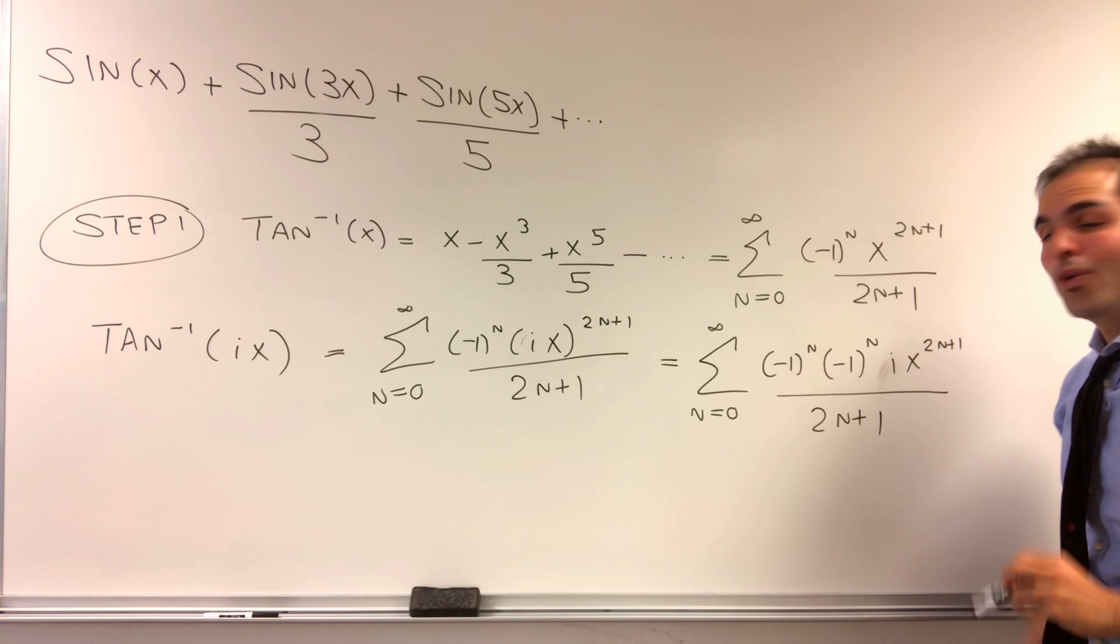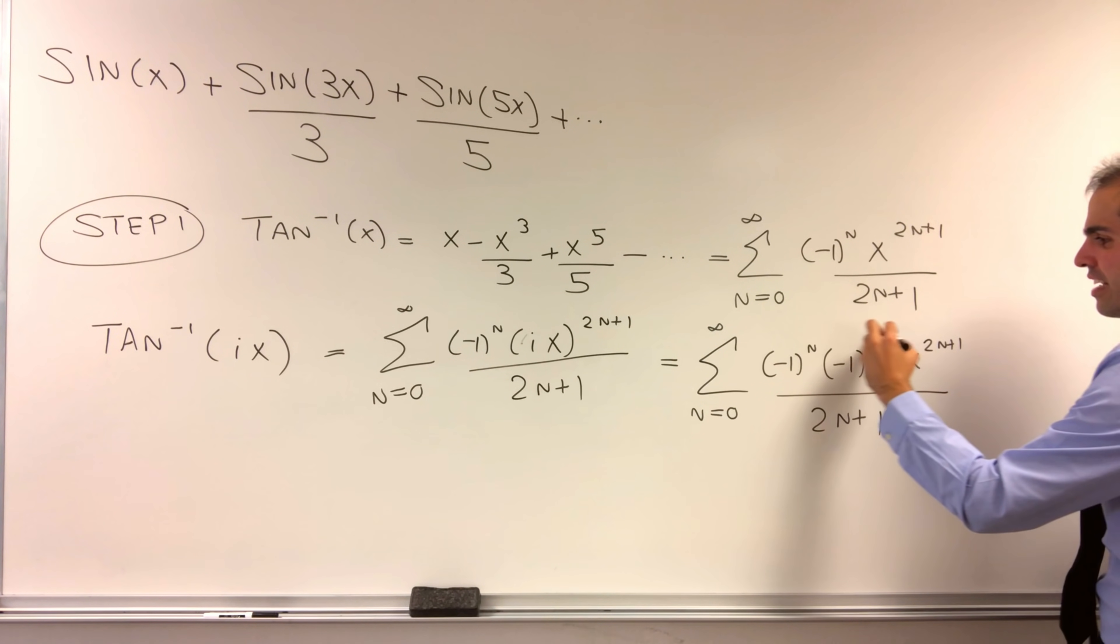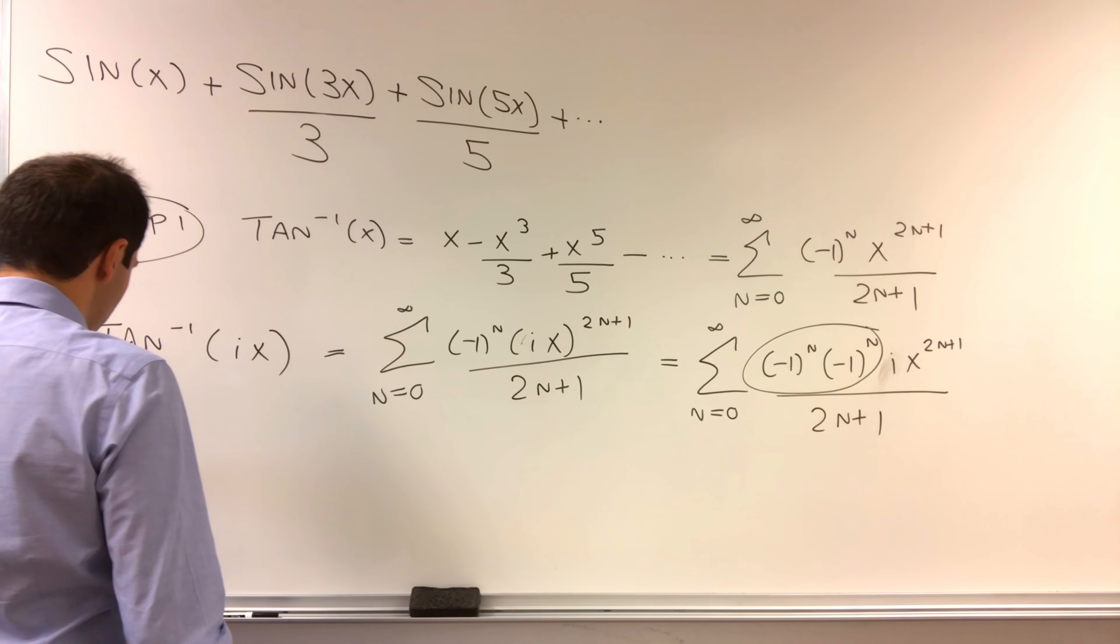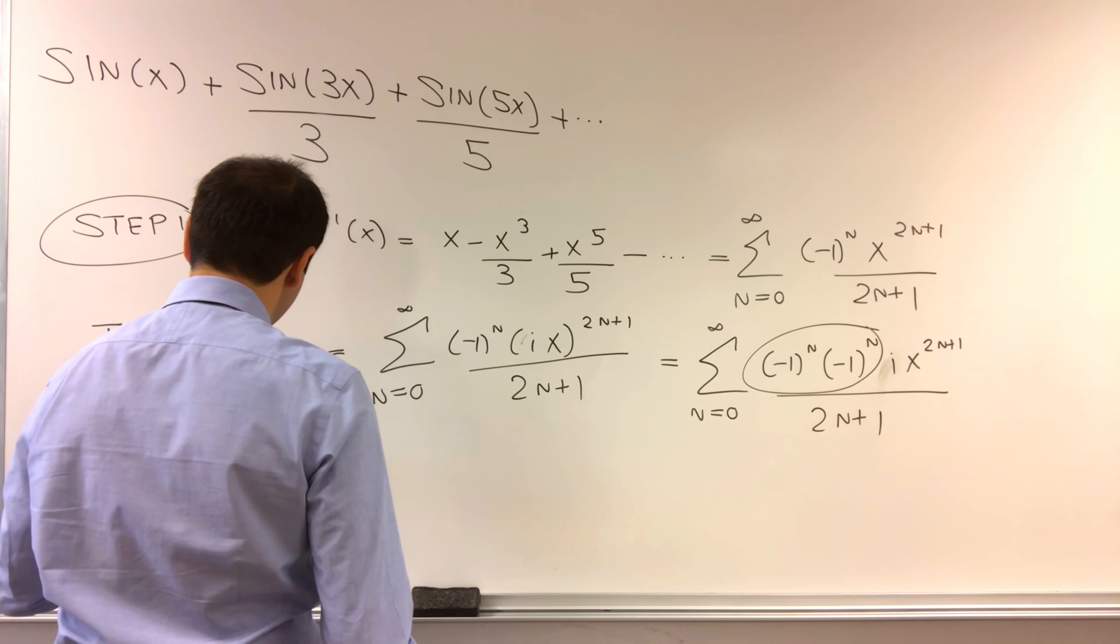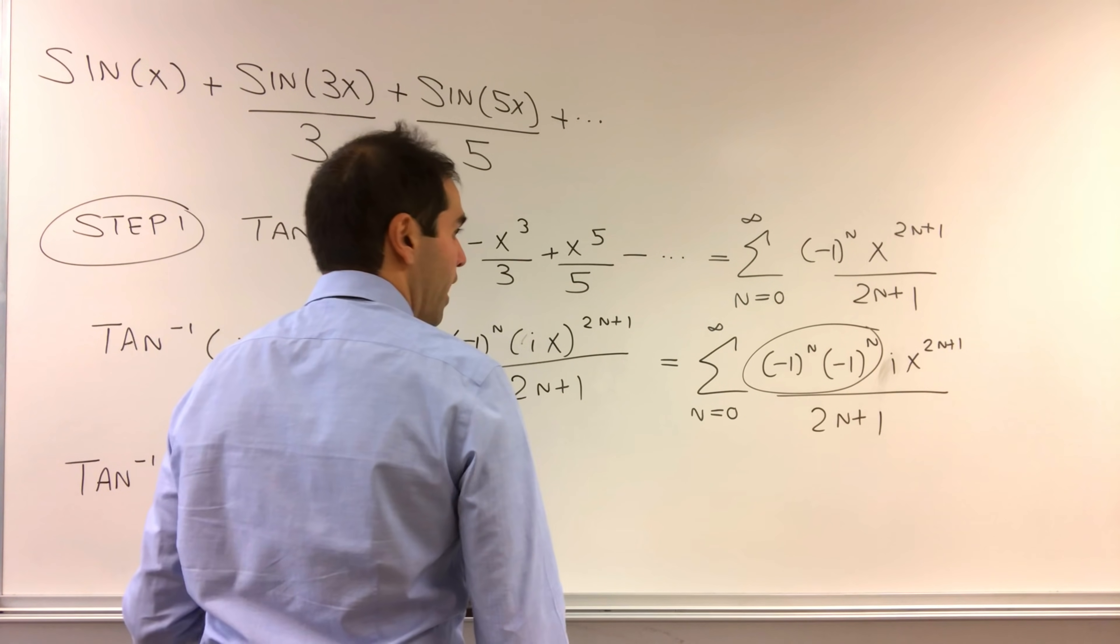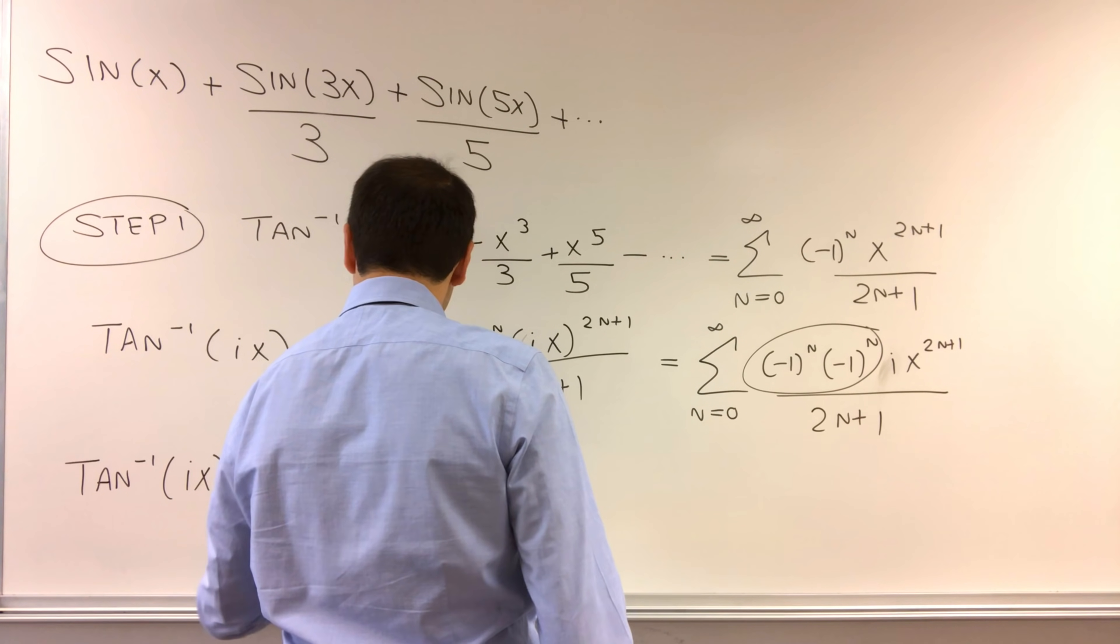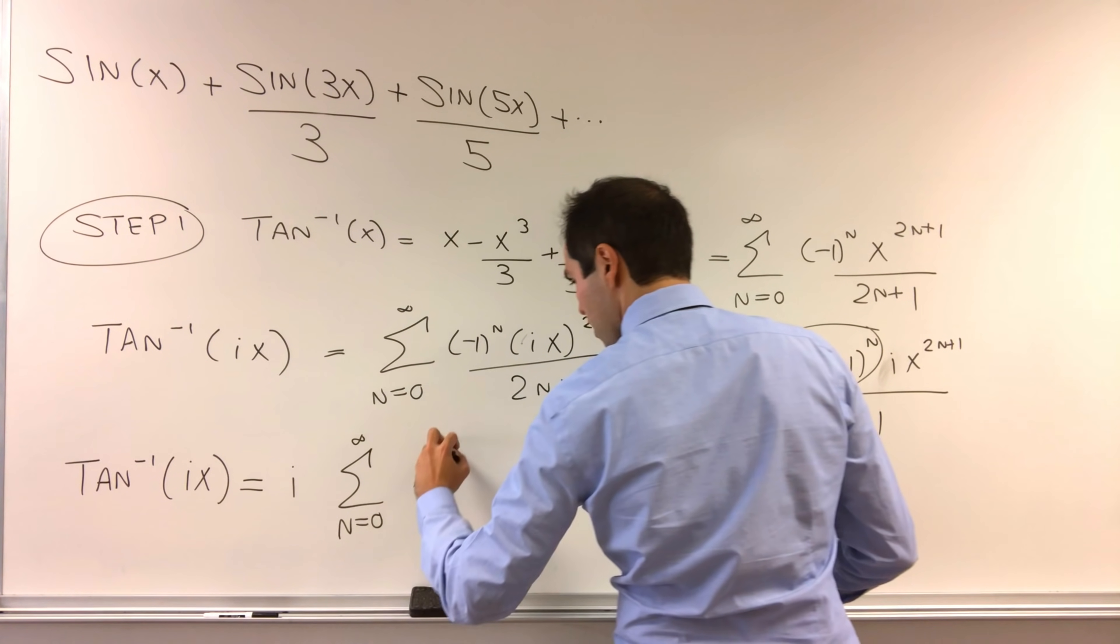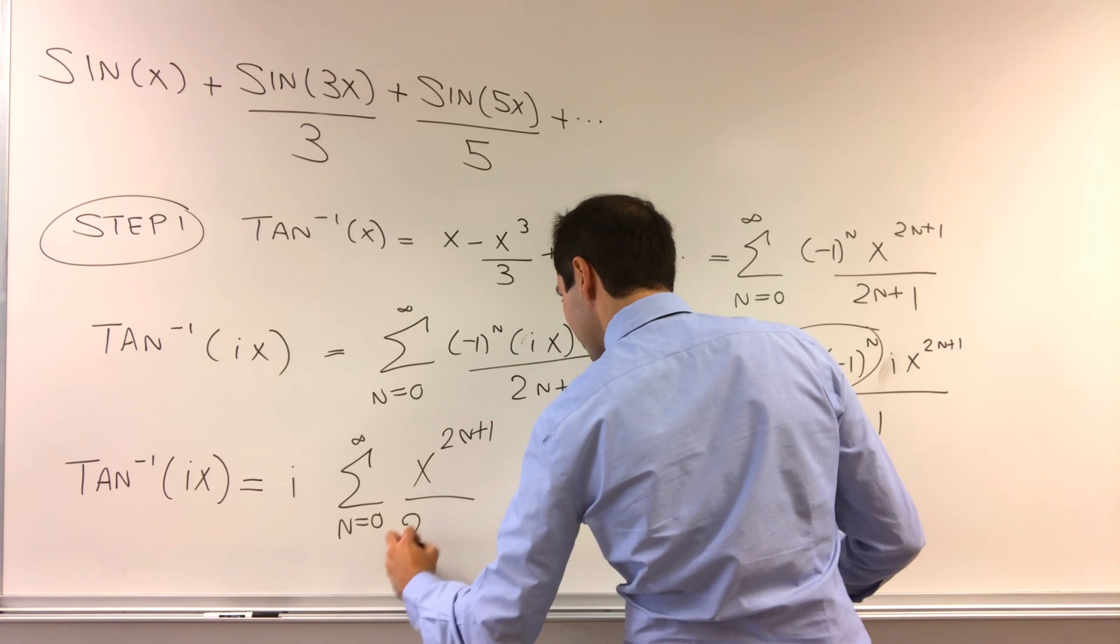And lo and behold, what's beautiful about this is that this minus 1 actually become plus. So in other words, what we get is arctangent of ix simply becomes i times the sum of x to the 2n plus 1 over 2n plus 1.